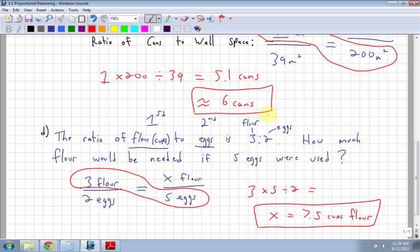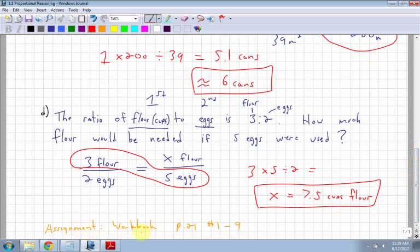So given a sentence, you have to come up with the ratio. Given the ratio, you have to be able to solve for the unknown value. Your assignment is in your workbook on page 21, numbers 1 to 9. And I'll see you next time.